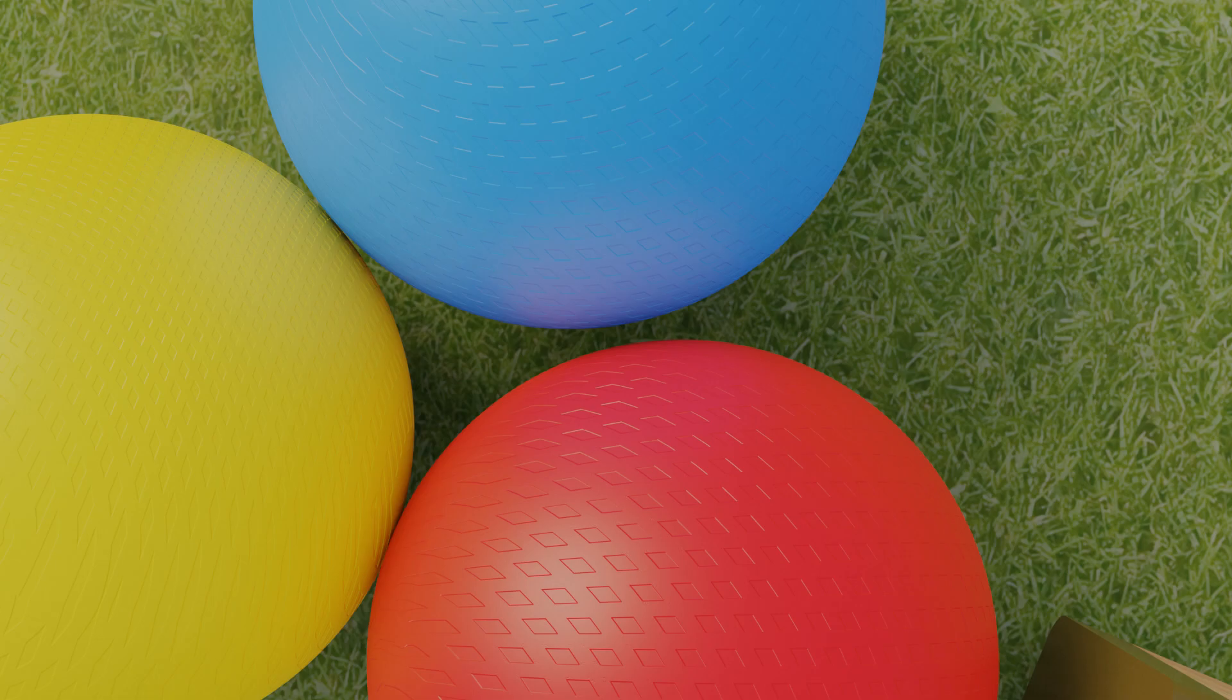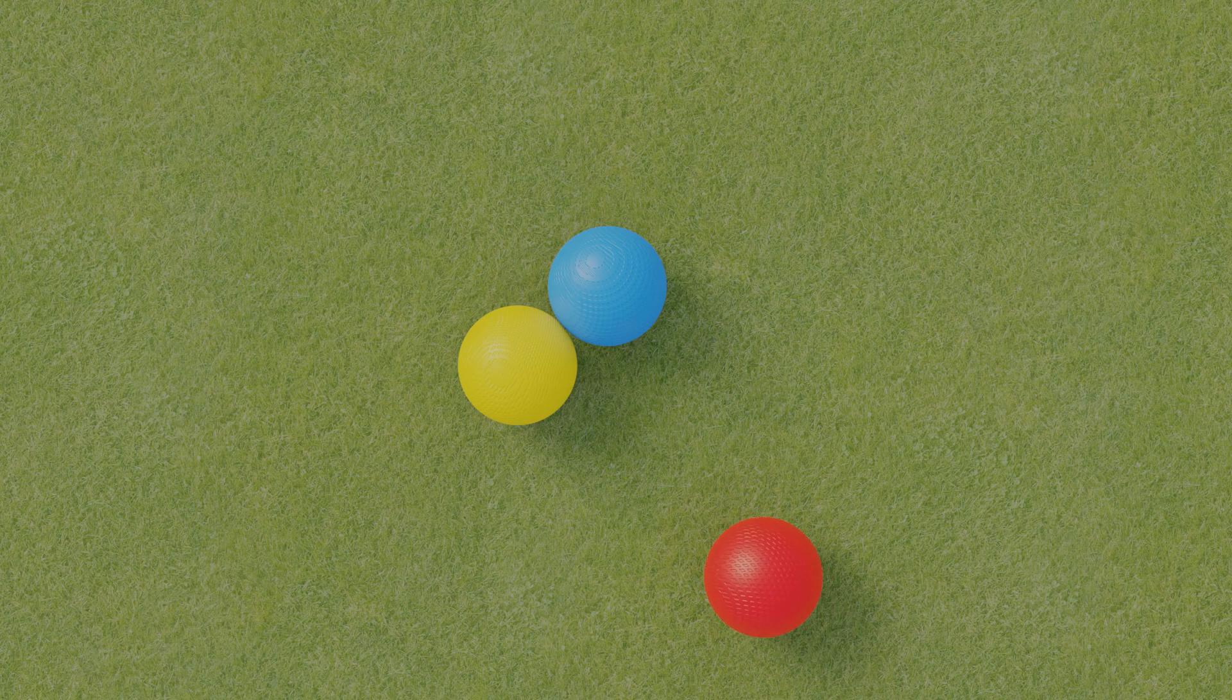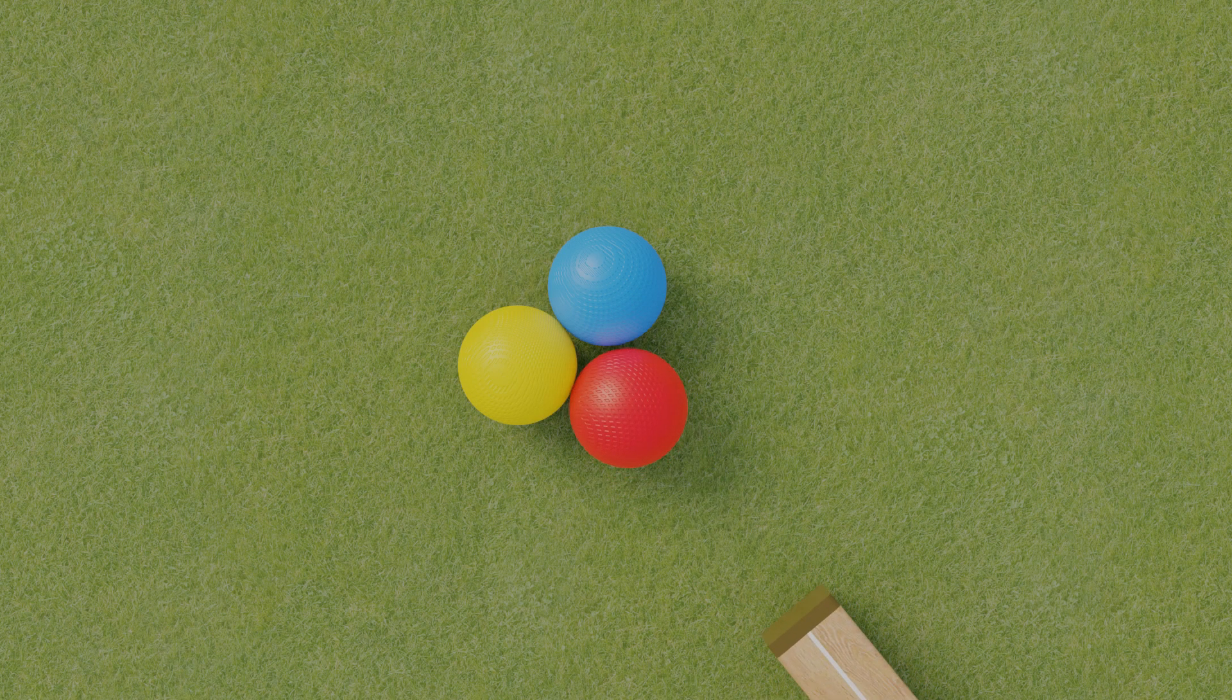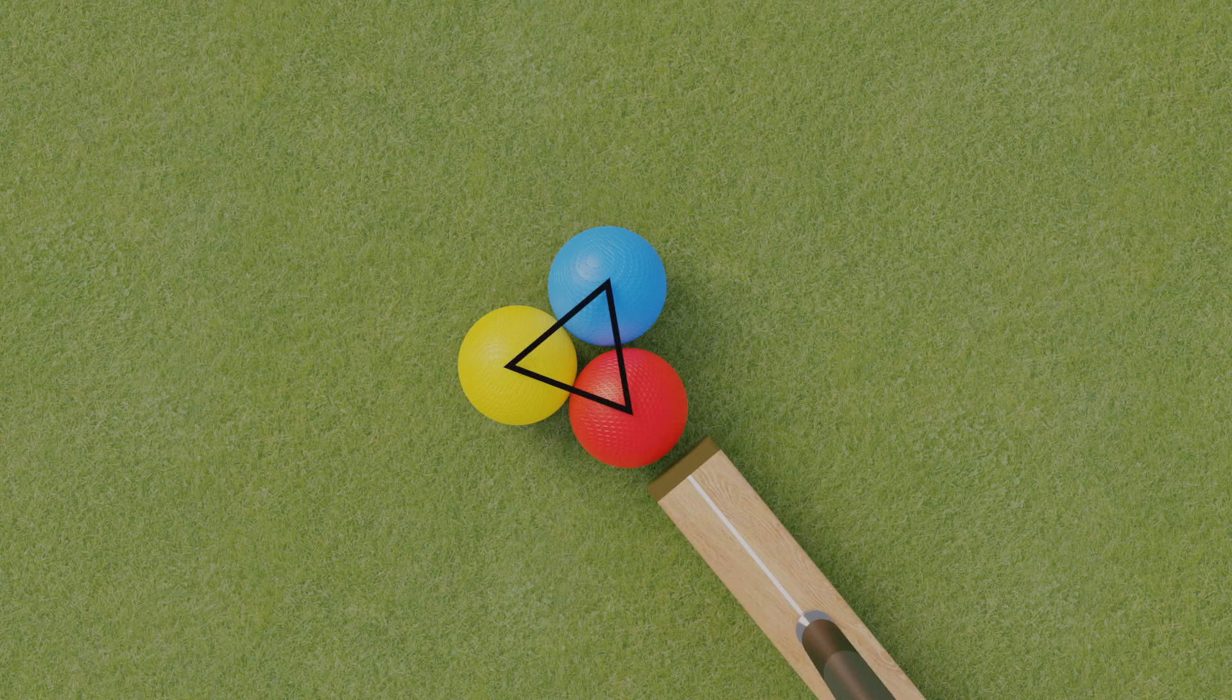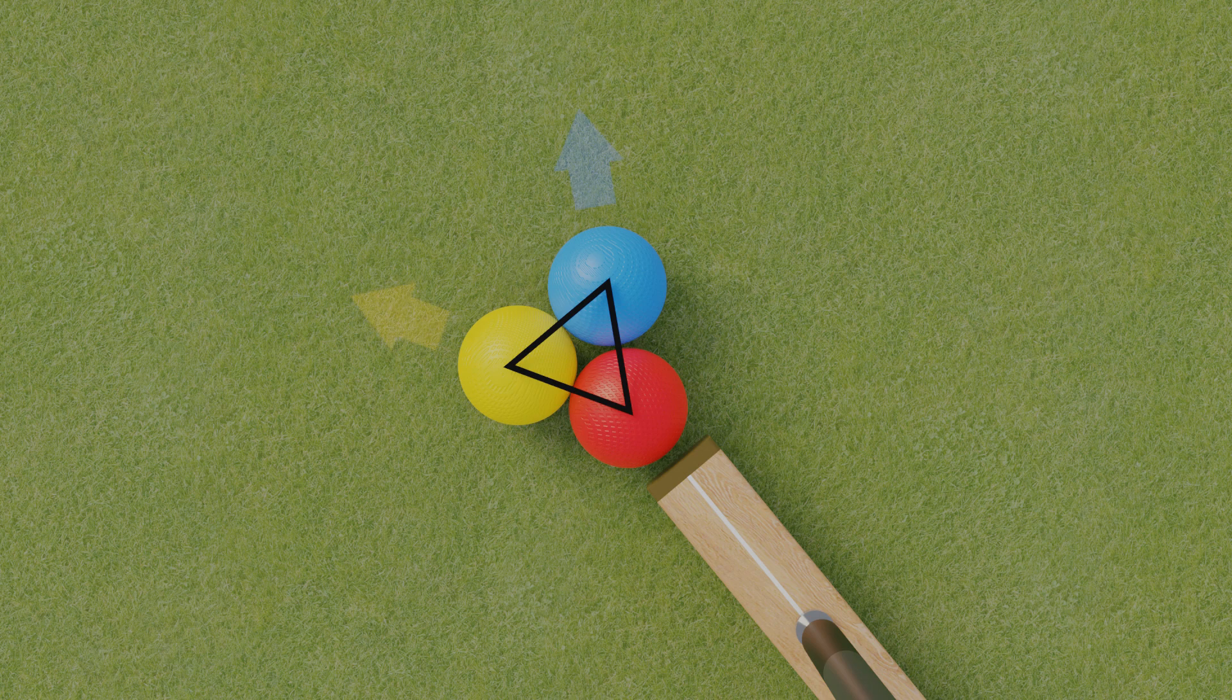To help make a prediction of where our yellow and blue balls are going to travel, a good starting point is to set up an equilateral triangle. If the red ball is now struck from this direction, we could fairly expect our two balls to go off at similar angles to each other and approximately similar distances.